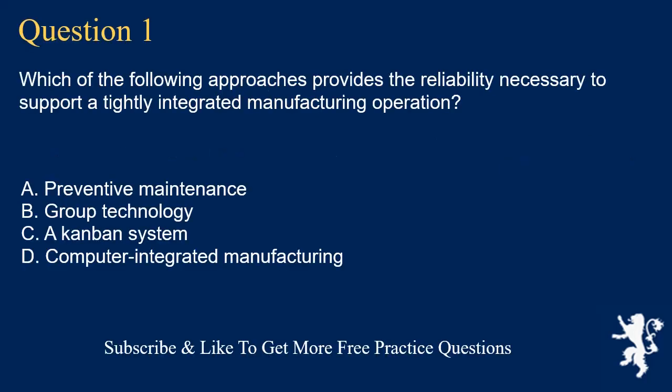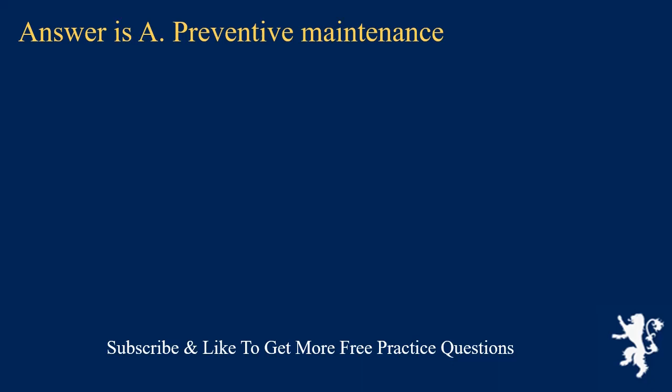Question 1. Which of the following approaches provides the reliability necessary to support a tightly integrated manufacturing operation? A. Preventive maintenance. B. Group technology. C. A Kanban system. D. Computer integrated manufacturing. Answer is A. Preventive maintenance.